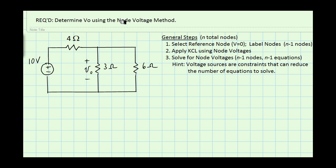Today we're going to review the node voltage method by solving for the voltage V0, which is across the 3 ohm resistor in this circuit.